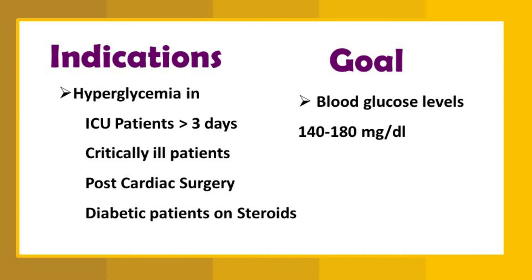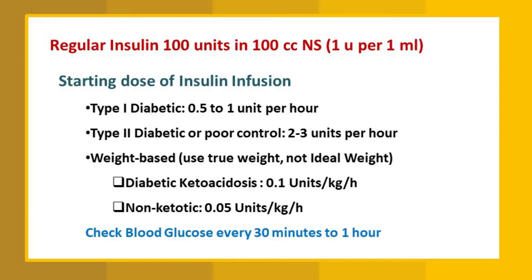The target range of blood glucose level is between 140 to 180 milligram per deciliter — that is the goal for such patients. Regular insulin is used as insulin infusion: 100 units in 100 cc of normal saline. The starting dose for Type 1 diabetes is 0.5 to 1 unit per hour, and for Type 2 diabetes or poor control, it is 2 to 3 units per hour.